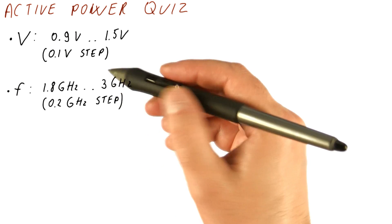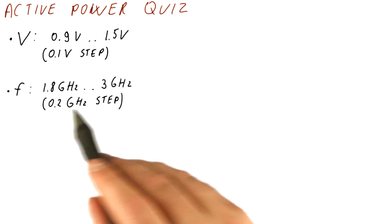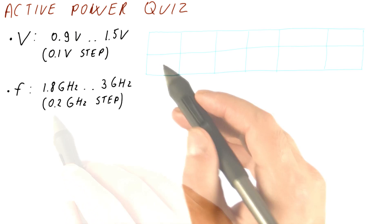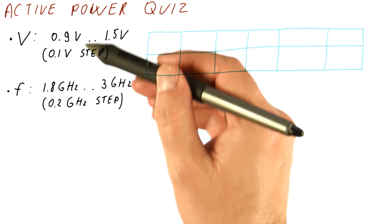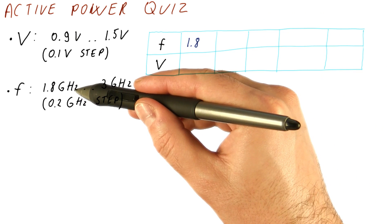Its frequency can be changed between 1.8 gigahertz and 3 gigahertz in 0.2 gigahertz steps. But there is a relationship between the voltage and the frequency you have to use. If we want to use the lowest frequency setting...